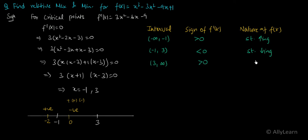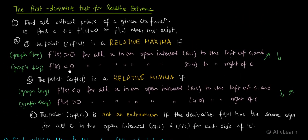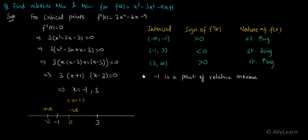Similarly, for the interval (3, +∞), f'(x) > 0, and the function is strictly increasing. Now applying the first derivative test: if the function goes from increasing to decreasing, the point is a relative maxima; if from decreasing to increasing, it is a relative minima. Since the function is increasing before -1 and decreasing after -1, x = -1 is a point of relative maxima. Since the function is decreasing before 3 and increasing after 3, x = 3 is a point of relative minima.